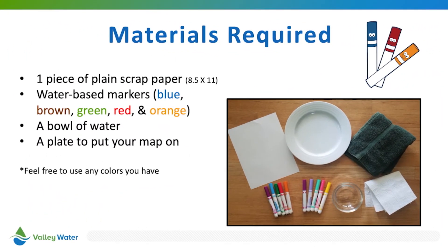For this activity, you'll need the following materials: a piece of plain scrap paper, some water-based markers, a bowl of water, and a plate to put your map on. For the markers, we recommend blue, brown, green, red, and orange, but if you don't have these exact colors, that's okay too.